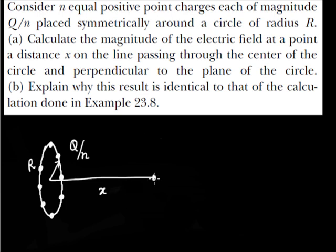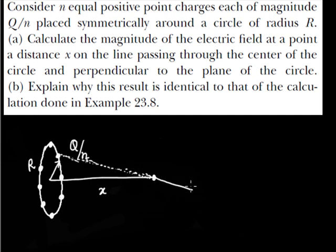So what we will do is calculate the electric field point by point. If I want to calculate the electric field due to one point charge, this electric field will be along this direction, and the magnitude will be (Q/n) divided by 4πε₀ times the distance squared.